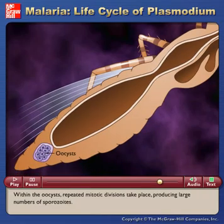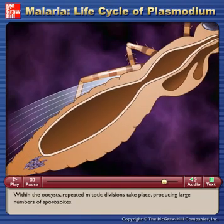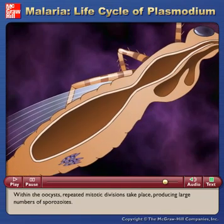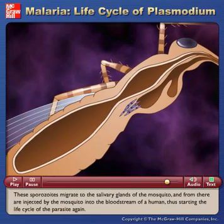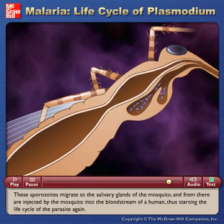Within the oocysts, repeated mitotic divisions take place, producing large numbers of sporozoites. These sporozoites migrate to the salivary glands of the mosquito and from there are injected by the mosquito into the bloodstream of a human, thus starting the life cycle of the parasite again.